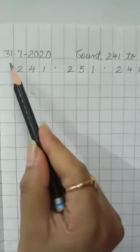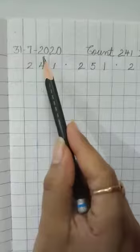First we will write date on the top. Today's date is 31st July 2020 and day is Friday.